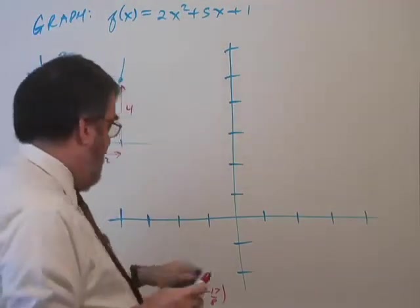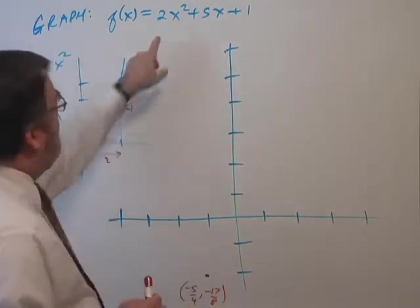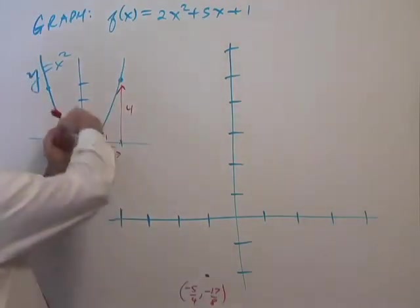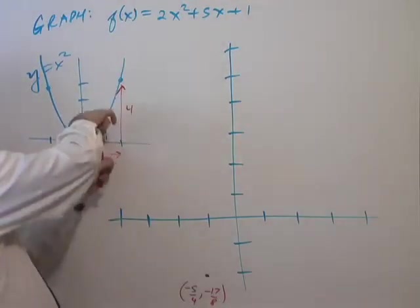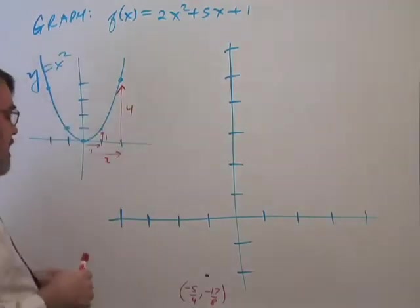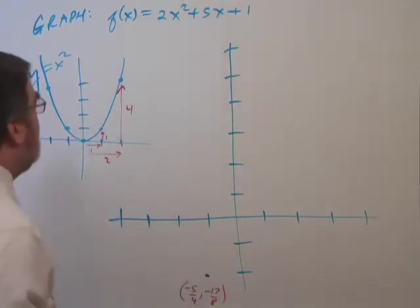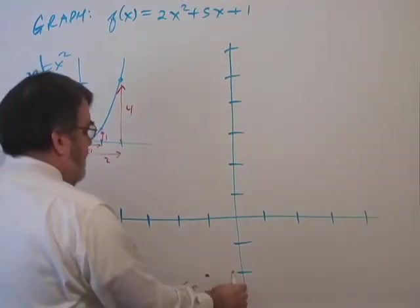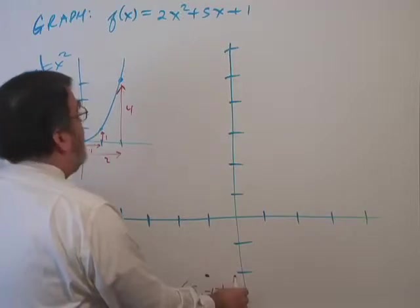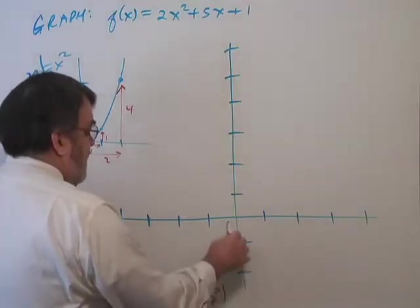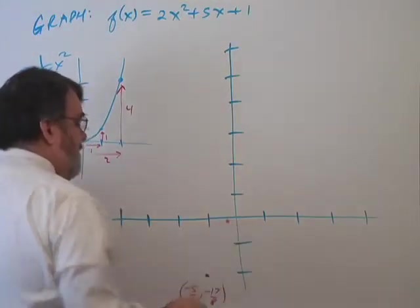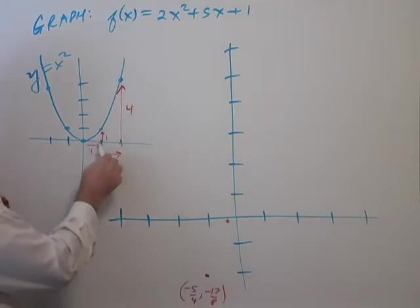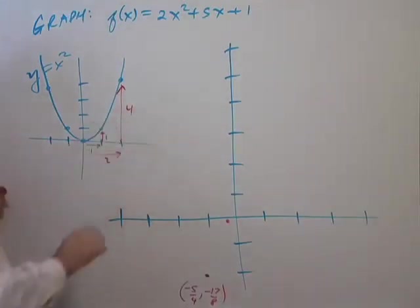Now what happens here? Y equals 2x squared means that there's been a stretch by a factor of two. That means I'm going to double these y values. So in other words, if I move one unit to the right of the vertex, then I'm going to go up by two units, twice as much.